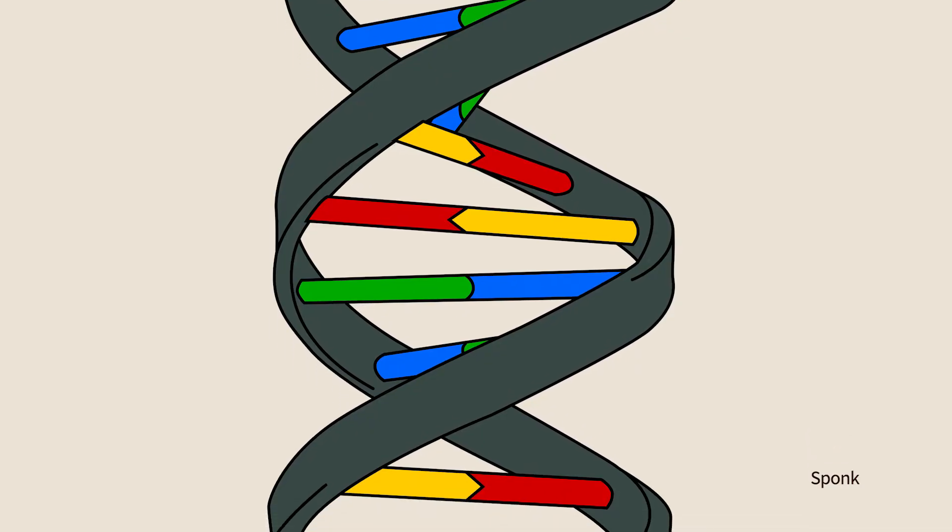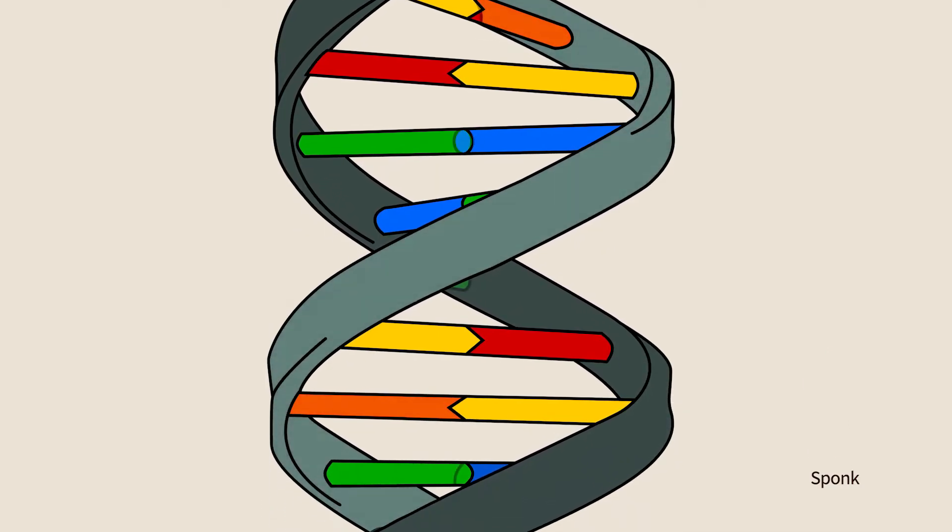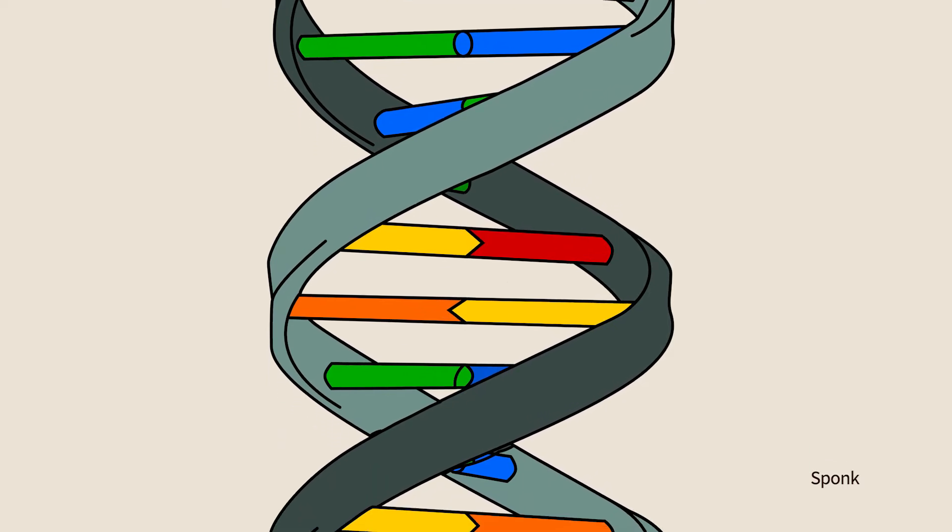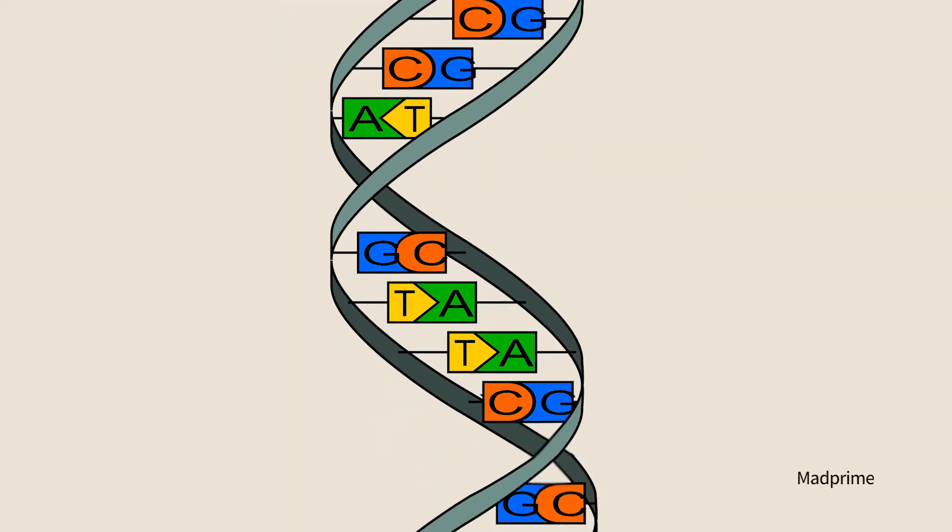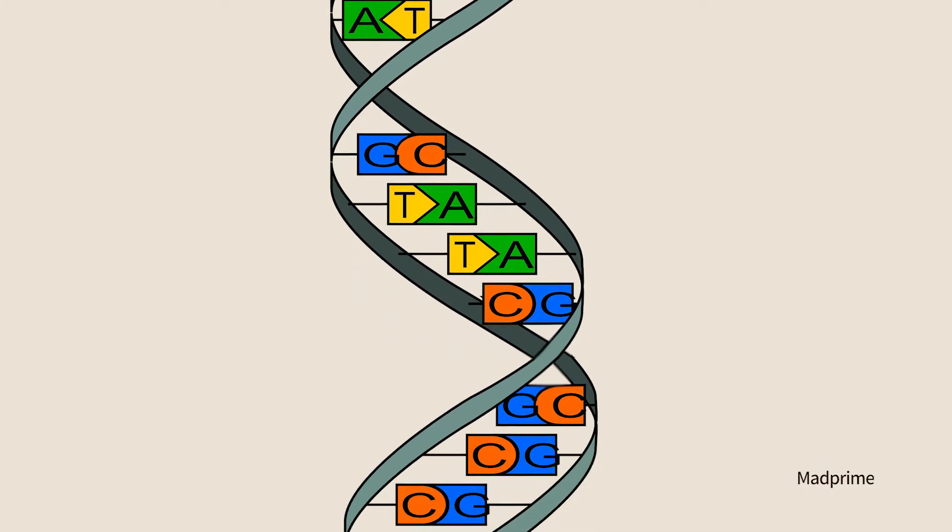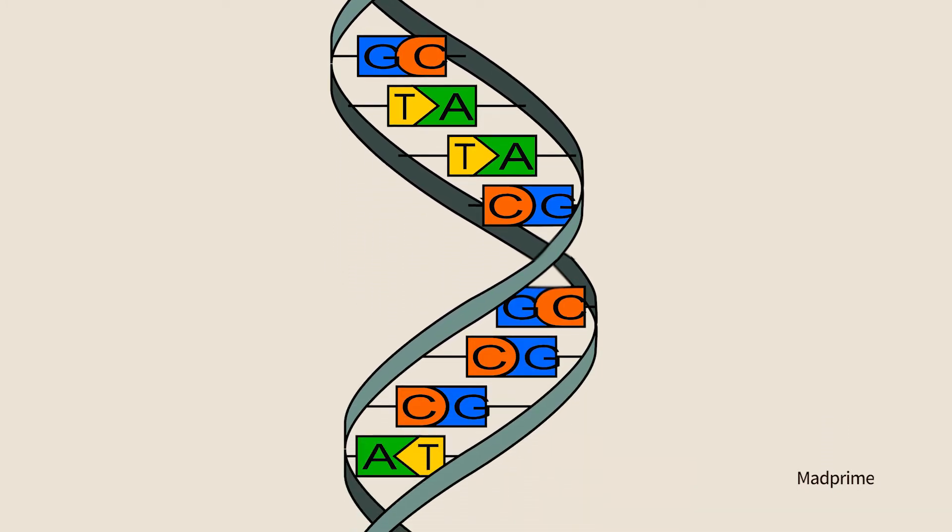When we learned about DNA in the previous chapter, we did not mention its most iconic property, that it is a double helix. As a double helix, the information on one strand complements the one on the second strand and thus enables replication.